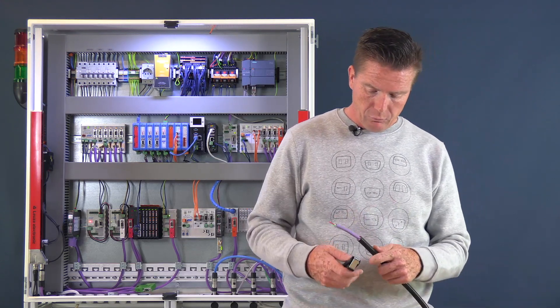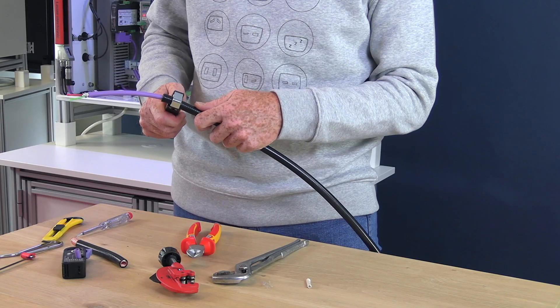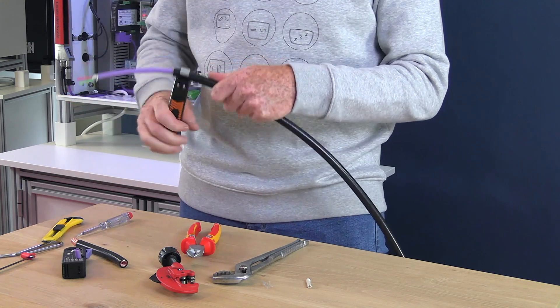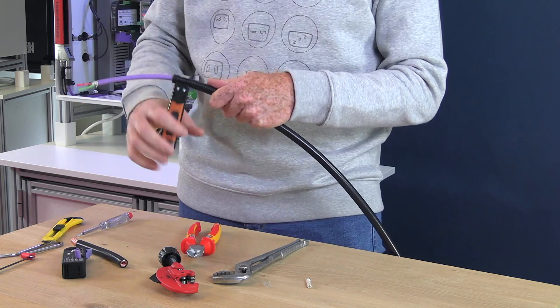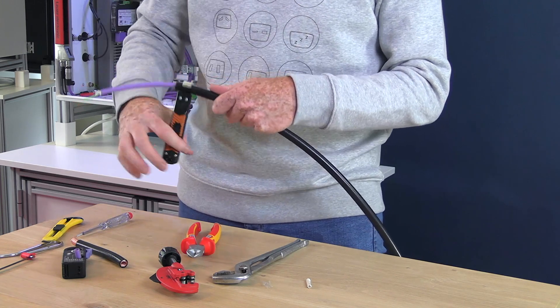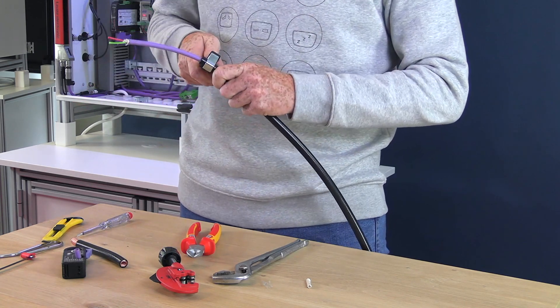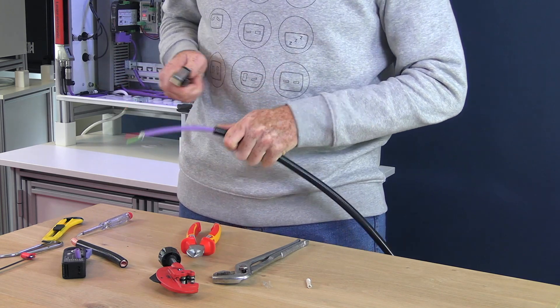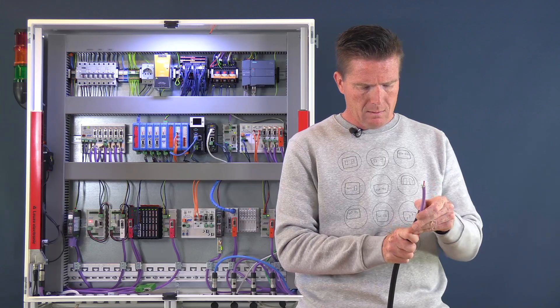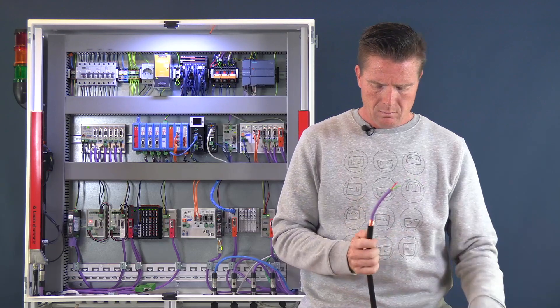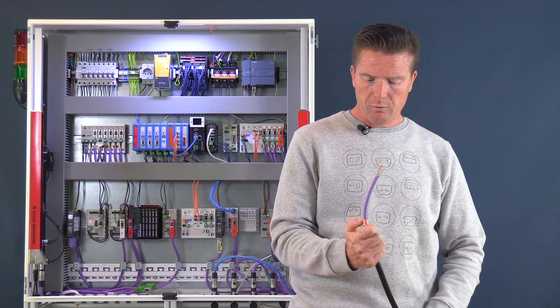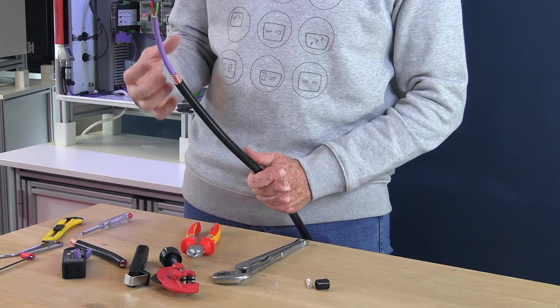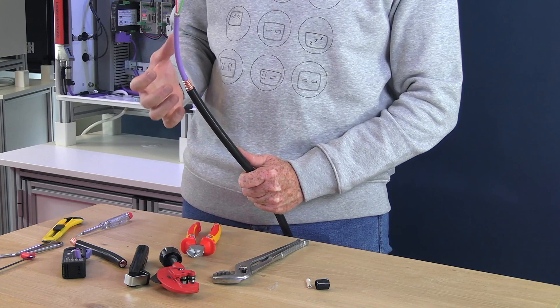One more thing. We need to strip the black jacket to be able to connect it to a ground rail or a ground clamp. I use my strip tool for that. Like that. There it is. Now I'm able to connect my extra copper tube to my ground rail or to an EMC gland.